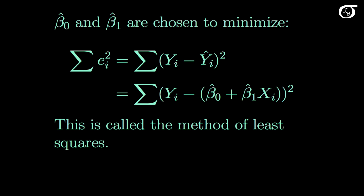Beta0 hat and beta1 hat are chosen to minimize the sum of the squared residuals. Each observation minus the predicted value from the model, squared and added up, we minimize that quantity. And this is called the method of least squares.